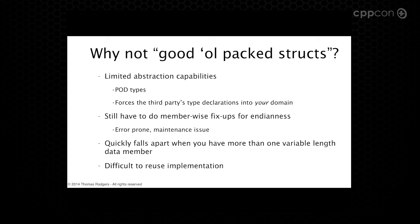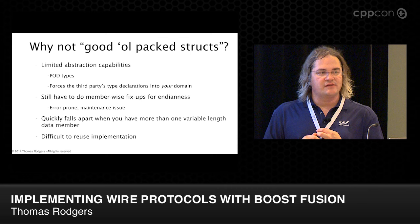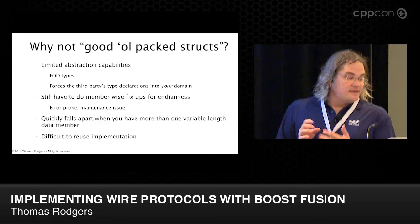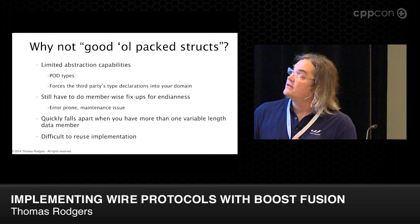But you're left with pretty limited abstraction capabilities. Plain data types are all you get. It forces whatever the third party's types are into your type domain, so you can't use your own types to represent the wire types. We still have to do all the member-wise fixups, and this gets to be an error-prone maintenance issue. In my experience, this approach really starts to fall apart once you have more than one variable-length field — if you have nested variable-length data structures or recurring collections, it gets really messy to write that kind of code using a reinterpret cast over a pack struct, and the resulting code doesn't lend itself to reuse.